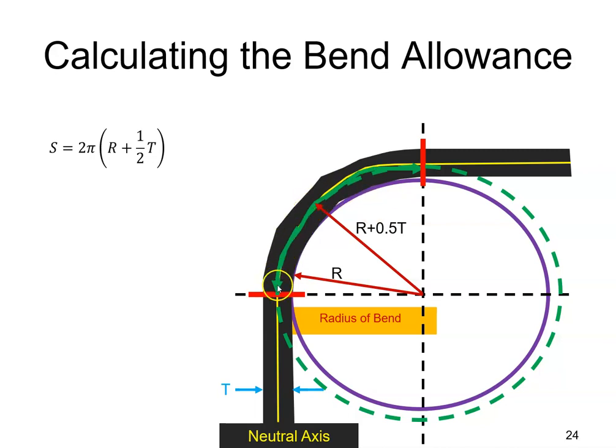If I wanted to get the circumference of that green dotted circle, it will be two pi, whatever the radius is. It's two pi, in this case, the bend radius plus half the material thickness. But I don't want the full circumference, I only want this portion of it. We could modify our formula here to say that the bend allowance, this distance here, is the circumference of the circle divided by